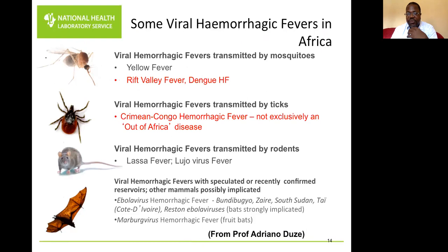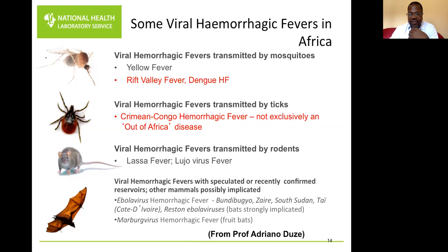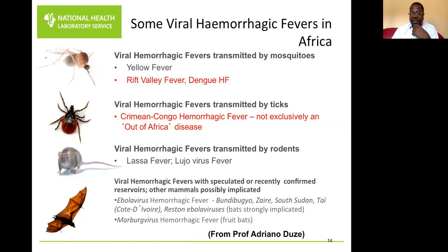There are viral hemorrhagic fevers transmitted by mosquitoes — examples include yellow fever, Rift Valley fever, and dengue fever. We also have VHFs transmitted by ticks — an example is Crimean-Congo hemorrhagic fever, which is not only found in Africa; there are cases outside the African continent as well.